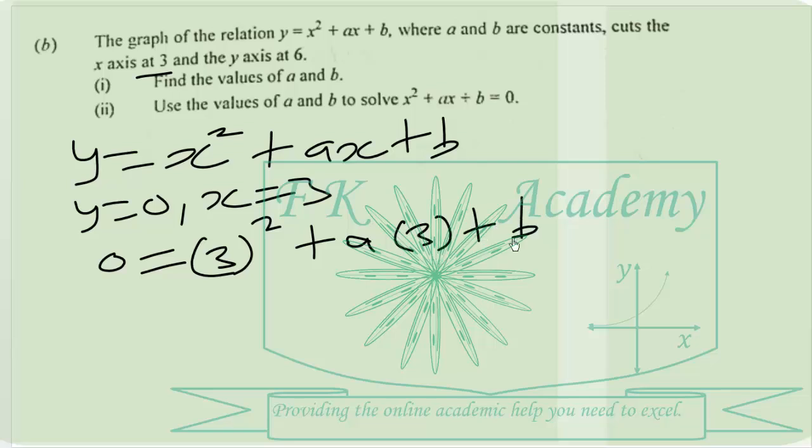So we get zero equals 9 plus 3a plus b. In other words, we have negative 9 equals 3a plus b. We can call this equation 1.